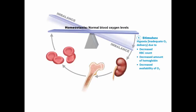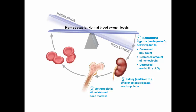Looking at the homeostatic mechanism: normal blood oxygen levels, if they go too low — a condition called hypoxia — due to low red count, decreased hemoglobin, or decreased oxygen availability, the kidney will be stimulated to release erythropoietin. The liver can do this to a certain extent as well. Erythropoietin stimulates the red bone marrow to produce red blood cells. As red blood cell count increases, oxygen-carrying ability rises, returning to normal levels, which turns off erythropoietin production.